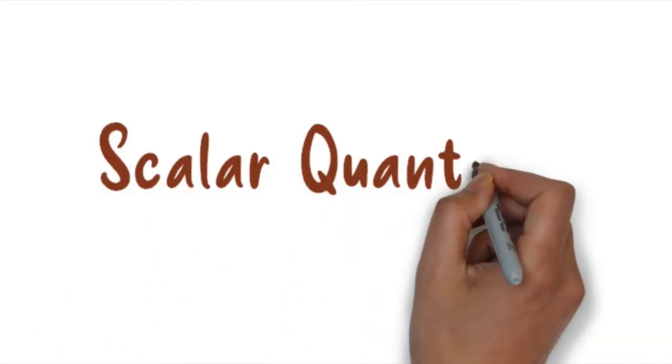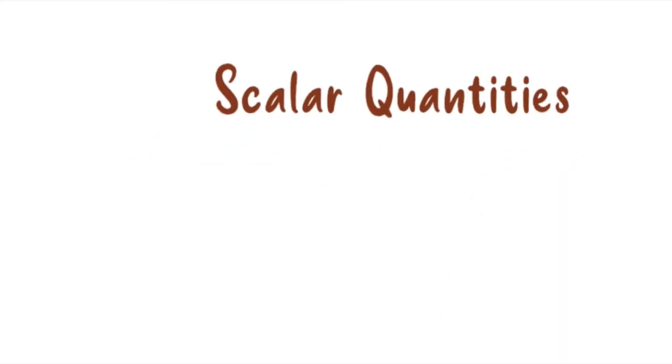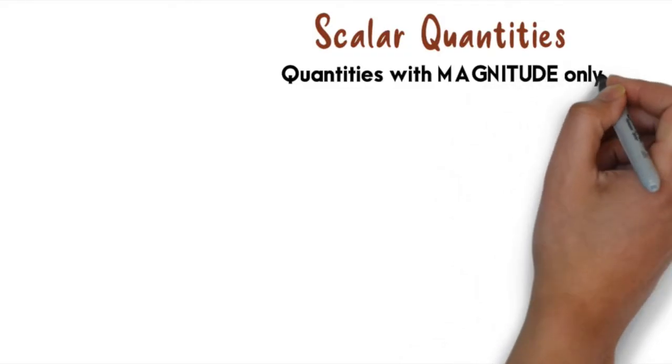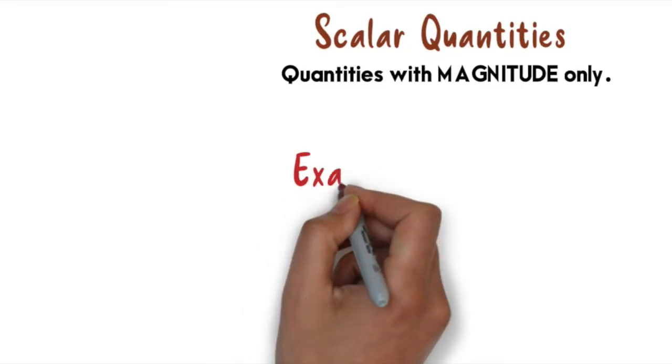Okay, let's talk about scalar quantity first. What is scalar quantities? Scalar quantities are quantities with magnitude only. Here are a few examples of scalar quantities. The first one is mass.